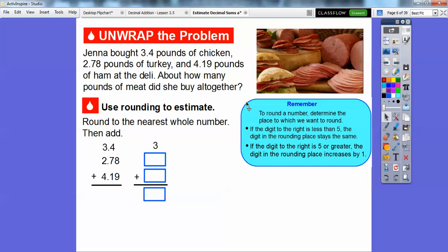Let's round these all to the nearest whole number. Since 4 is less than 5, this 3 stays the same. Now we're going to round this 2. Since 7 is greater than 5, we're going to round this up to 3. And this one is going to stay down at 4 because of the 1.